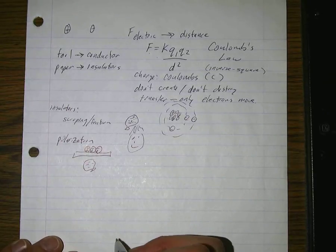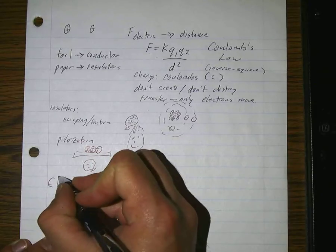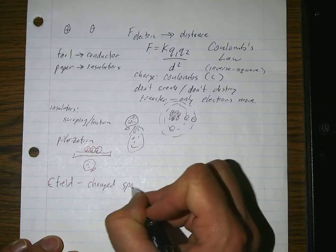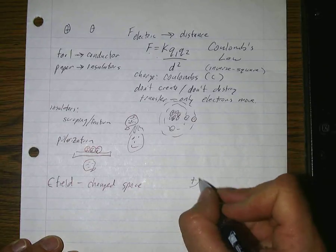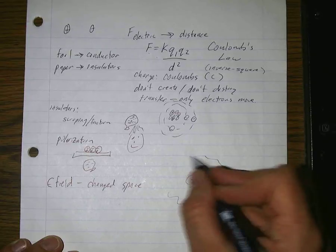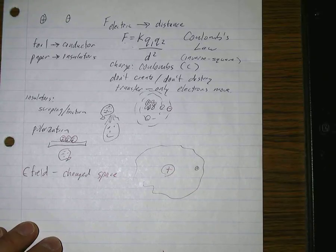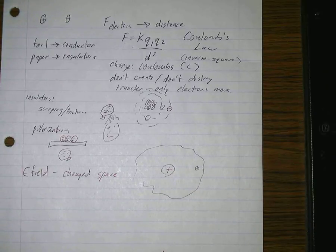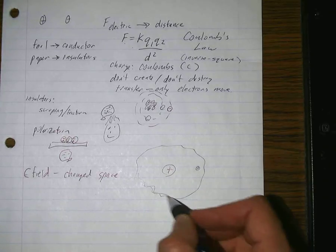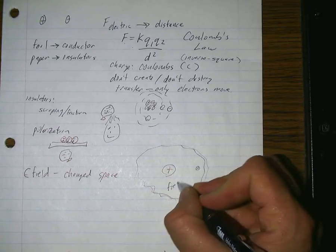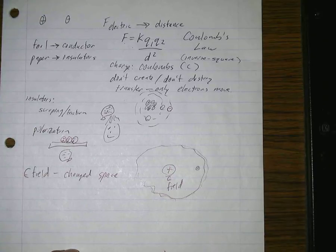Once we had done charges, we started moving into electric fields — those are the changed space around a charge. You can imagine a charge and then somehow the space has been changed. They invented that idea because they didn't like the thought that two positives could somehow interact with each other without ever touching. So they said: let's make something new — this first charge changes the space around it; we'll call it an electric field. And the second charge is touching the electric field, so it feels a force.